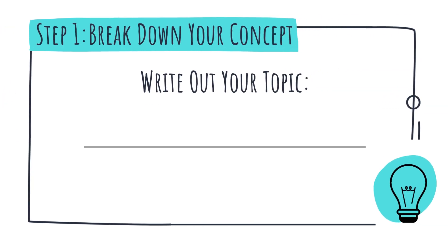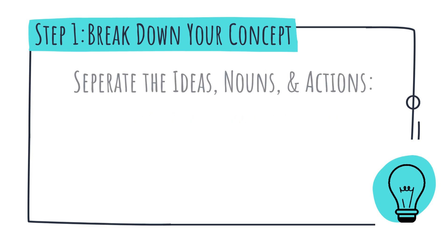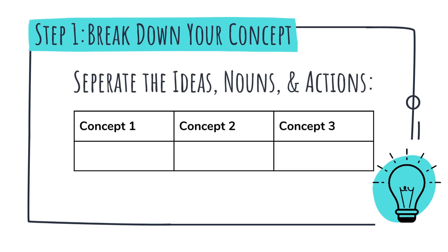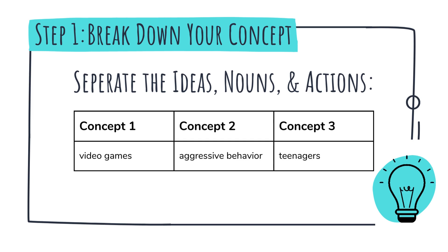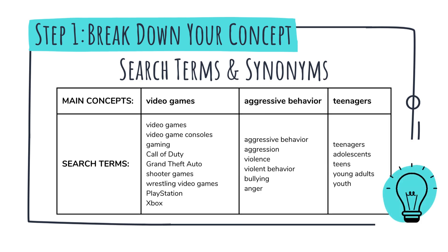The first thing you need to do is write out the topic you're researching. What you're going to do is break it down into what are essentially the building blocks or main concepts of your topic. Separate out each individual idea, noun, and action, and make sure each concept is only one or two words. Once you've identified the main concepts, generate a list of search terms or keywords and key phrases under each concept. Then you'll want to come up with alternate words for your search terms. Consider synonyms, related terms, broader terms, and more specific terms.